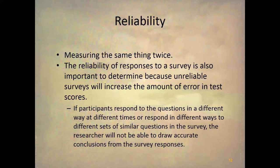Reliability is the second really important psychometric property, and reliability means that you're measuring the same thing twice. Any measuring device should measure the same thing twice. If I hop on my bathroom scale and it says I weigh 200 pounds, then I hop off and on again and it says 180 pounds, then 150 pounds — are you going to trust that scale? No, because it's not giving you the same measurement twice in a row. That's what reliability is.